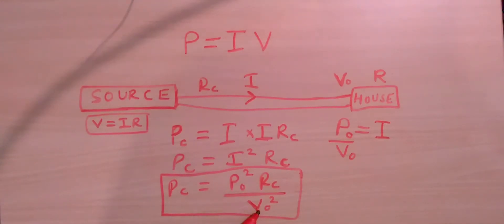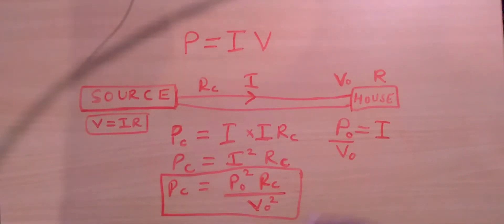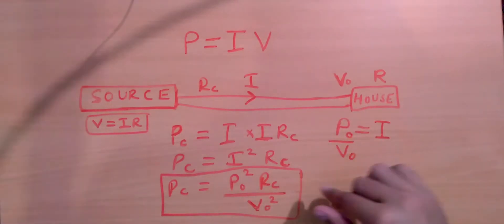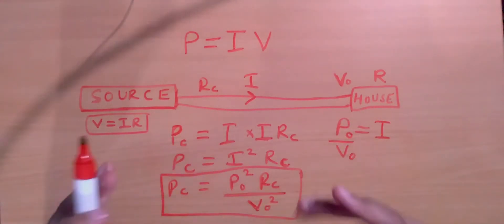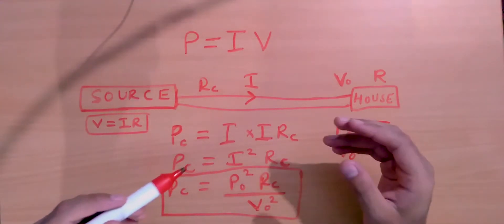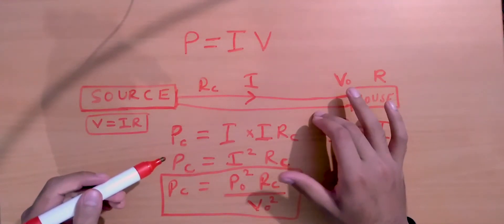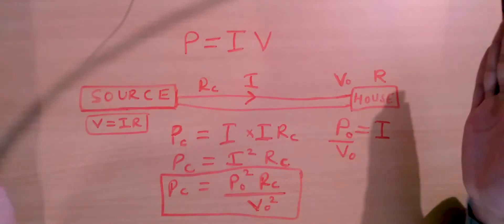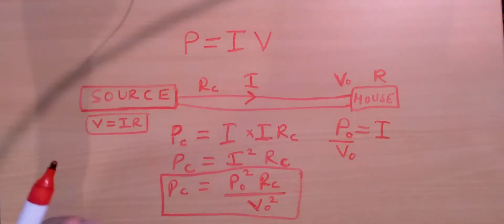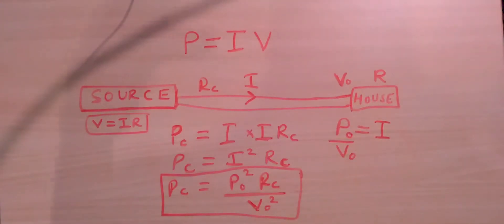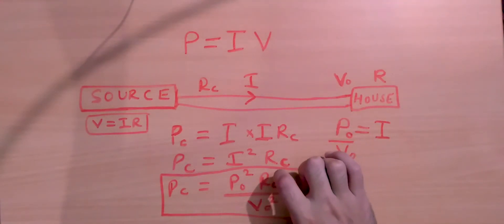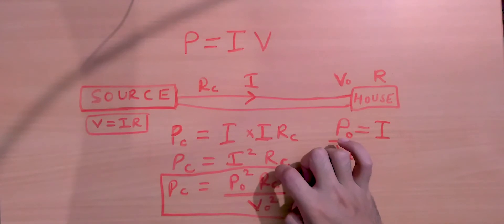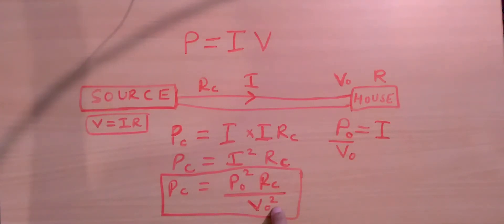If we supply current to houses at a very high voltage, the power loss would reduce substantially. The power output Po cannot easily be changed because the amount of power required by a house is fairly fixed. Similarly, Rc can be reduced to a limit — we can use good conducting material and make wires thicker — but there are financial constraints, and we cannot use silver for wires. So the most practical variable we can change is the output voltage.